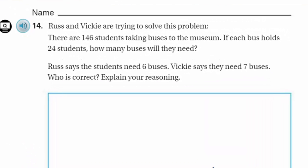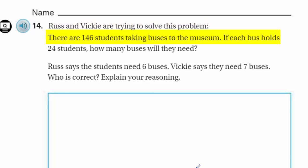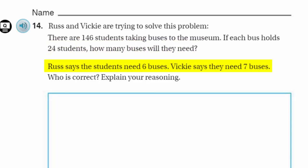Okay, the problem says: Russ and Vicki are trying to solve this problem. There are 146 students taking buses to the museum. If each bus holds 24 students, how many buses will they need? Russ says the students need six buses. Vicki says they need seven. Hmm, interesting. She respectfully disagrees with Russ. Who is correct? Explain your reasoning.